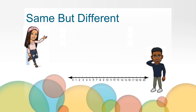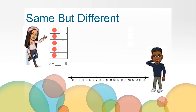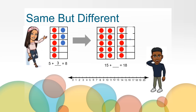Now that you've had some time to think about the problem, let's compare your ideas or strategies to the thinking of other students. Let's start with Maria. She started with a smaller fact she knew. She thought: 5 plus what equals 8? She knew it was 3. Then she used that fact to solve the larger problem: 15 plus what equals 18? She noticed that there is another group of 10 in this problem, but she knew she still just needed to add on 3 more to get to 18. So 15 plus 3 equals 18.